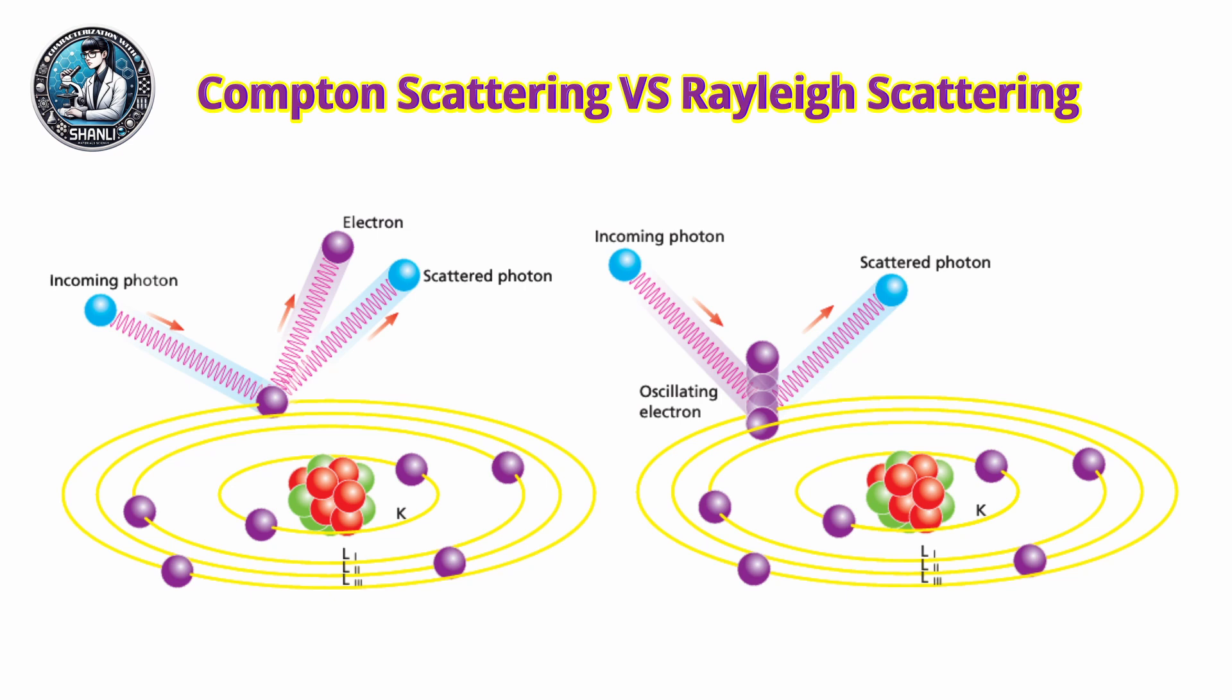On the other hand, Rayleigh scattering happens when an X-ray photon interacts with a tightly bound electron. In this case, the electron stays in place but begins to oscillate at the same frequency as the incoming radiation.